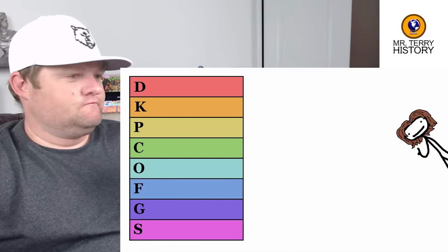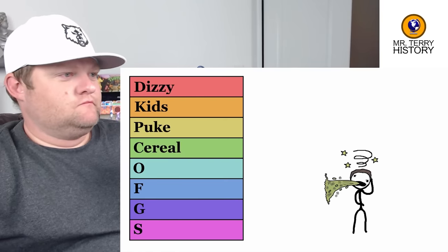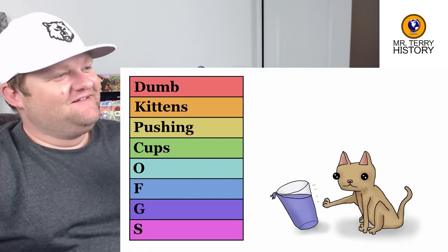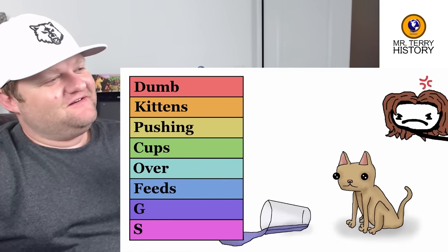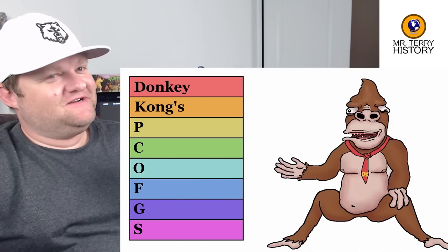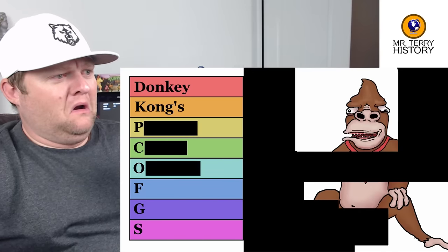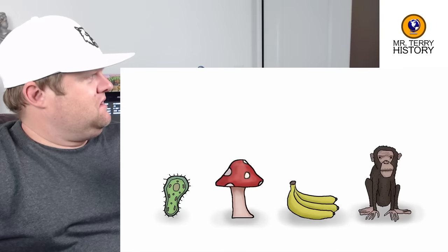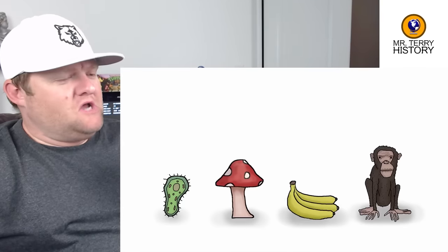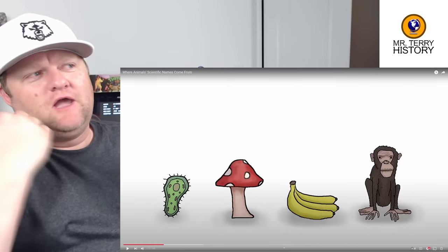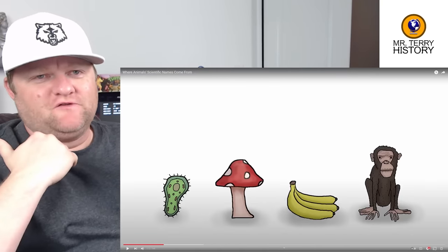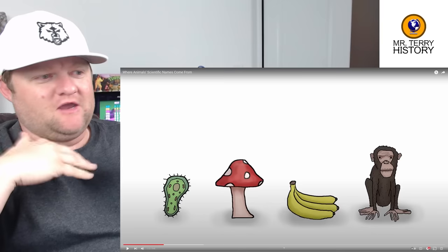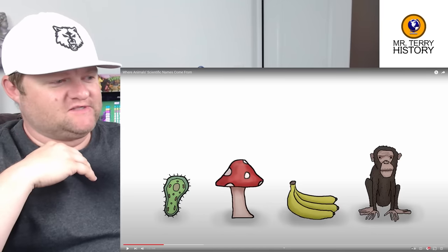So allow me to suggest a few mnemonics: 'Dizzy kids puke cereal on fairground staff.' 'Dumb kittens pushing cups over feeds growing spite.' And... 'Donkey Kong's puke...' — don't do that one. Biology teacher friends of mine, don't do that one, okay? You've gotta get a scientific consensus.